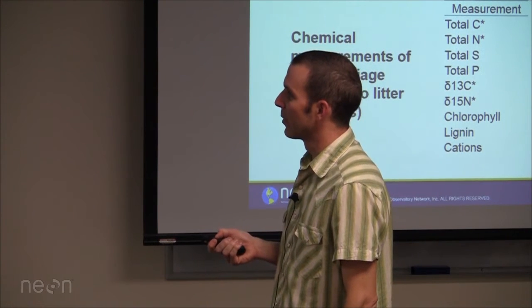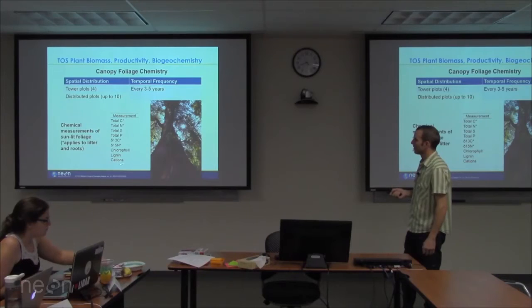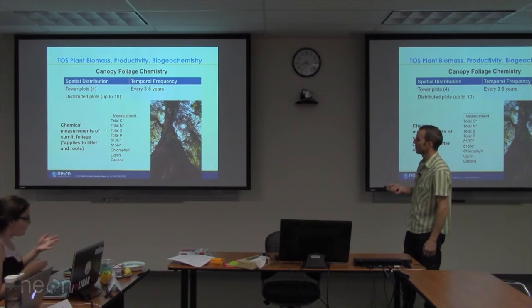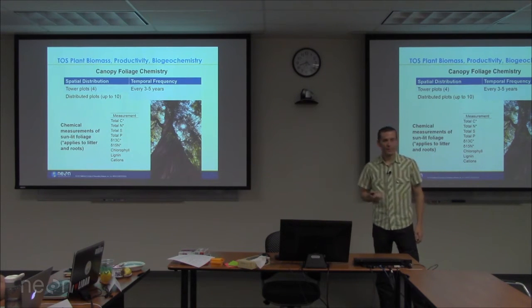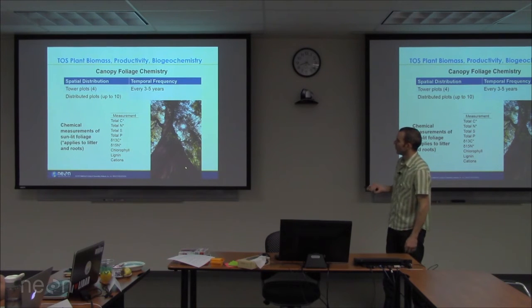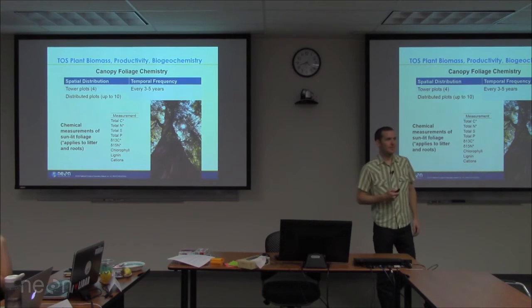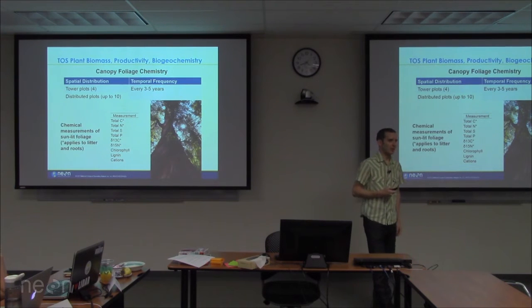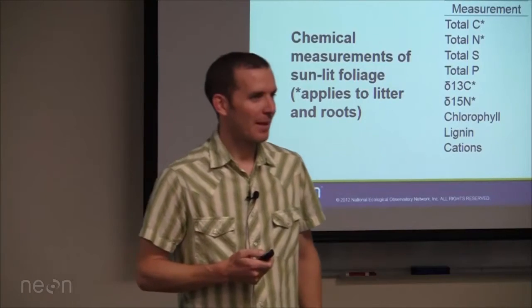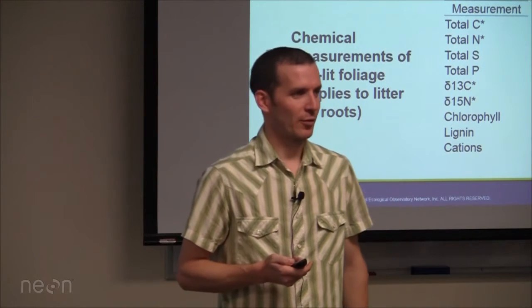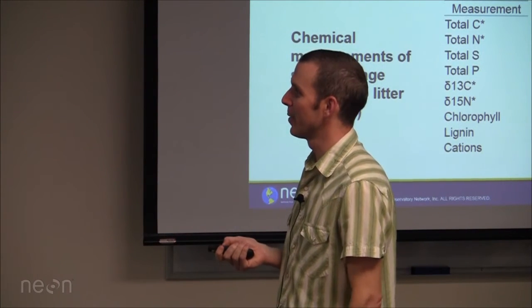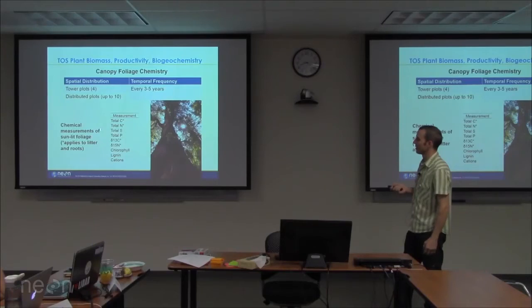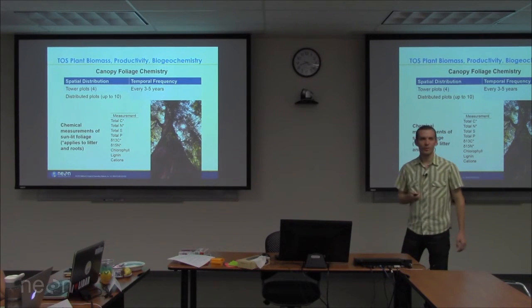Within the leaf samples we get, we're measuring these constituents from sunlit foliage only. In systems with very tall old-growth trees that's challenging, whereas in a grassland it's straightforward. We'll also be measuring biogeochemistry variables with stars in litter and roots as well.